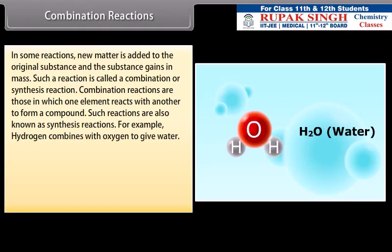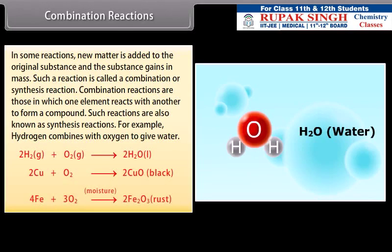For example, hydrogen combines with oxygen to give water: 2H2 plus O2 gives 2H2O. 2Cu plus O2 gives 2CuO. 4Fe plus 3O2 gives 2Fe2O3.